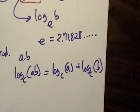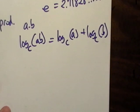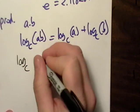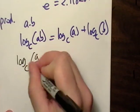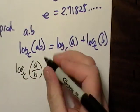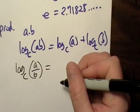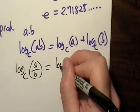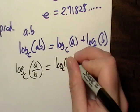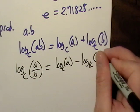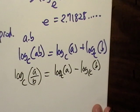And the same thing is kind of true for division. If you get the natural log of a fraction, well, you can rewrite it as log of base c of a minus log base c of b. So, you can do the same thing.